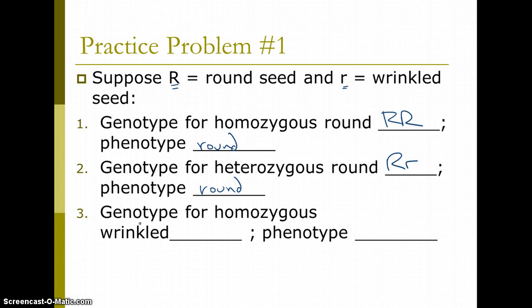So, the genotype for homozygous wrinkled, homozygous is same, and it's wrinkled, so it's recessive. So, it's going to be little r, little r, and the phenotype is wrinkled. I hope that makes sense.